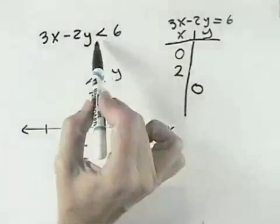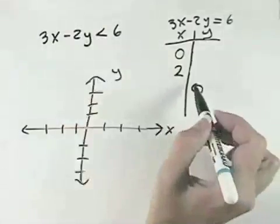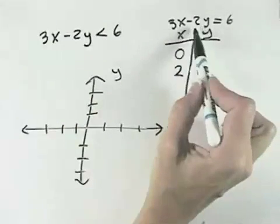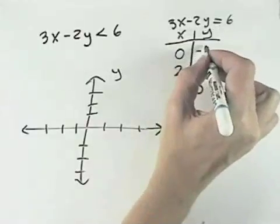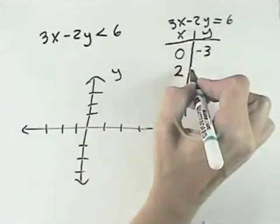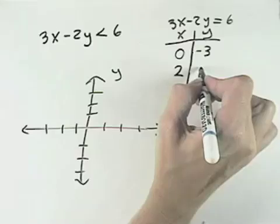So for this equation, because it's just less than, we'll have a dotted line. And I've chosen some points. If we graph 3x minus 2y equals 6, well, if x equals 0, y will be negative 3. If x equals 2, y will be 0.